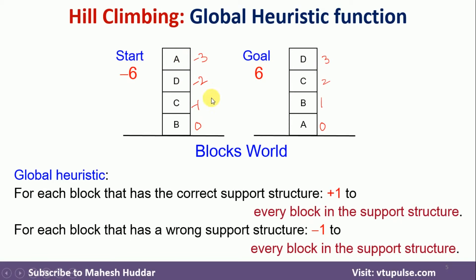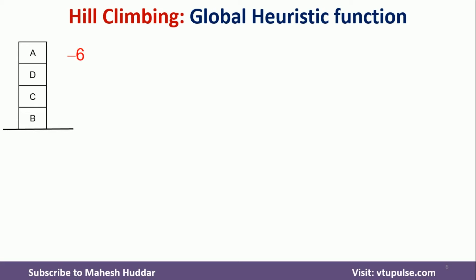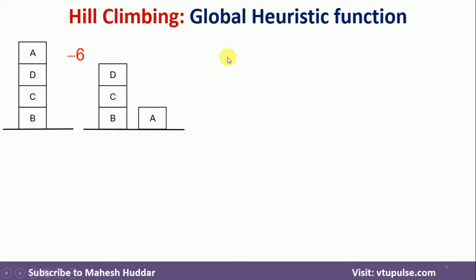First, I move A to the ground. Now below B, nothing is there, so zero. Below C, B is present but incorrectly placed. Below D, C and B are there and both incorrectly placed. Below A, nothing is there, so zero. The total value of this state is minus three.